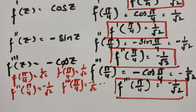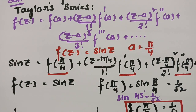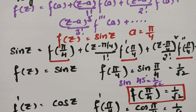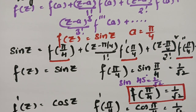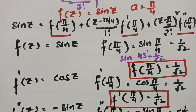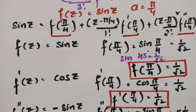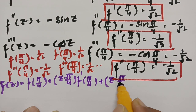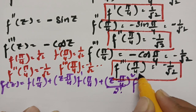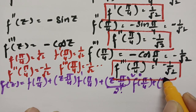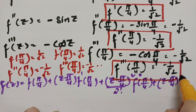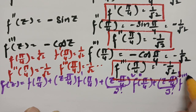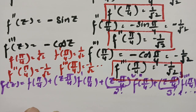Therefore our Taylor series is: f(z) = f(π/4) + (z − π/4) · f'(π/4) + (z − π/4)²/2! · f''(π/4) + (z − π/4)³/3! · f'''(π/4) plus and so on.